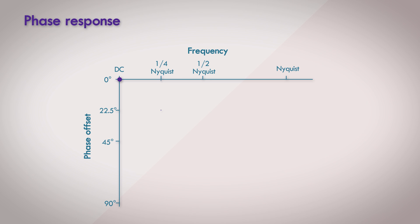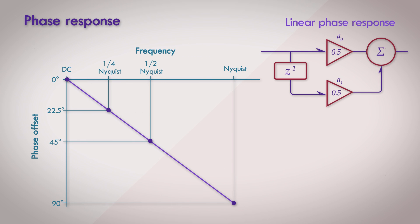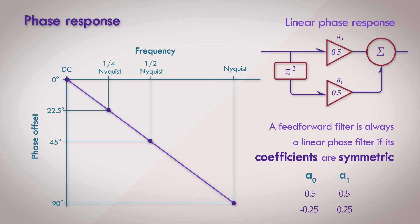But now, let's look at the phase response of the filter. The phase response is a straight line, with no phase shift at 0 degrees, to a 90 degree phase shift at the Nyquist frequency. This is called a linear phase response, and is not a very common thing to see in filtering. In fact, this simple filter design is a linear phase filter, but only under certain conditions. A feedforward filter will always be a linear phase filter, if its coefficients are symmetrical about their center. In this case, the coefficients that we've chosen for a0 and a1 are 0.5 and 0.5, and they're symmetrical. Another example would be negative 0.25 and 0.25.